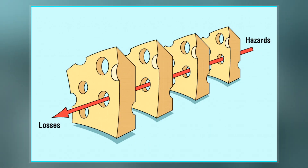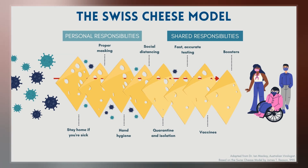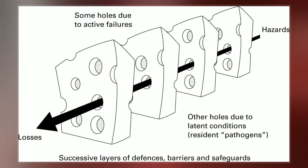In the Swiss cheese model, an organization's defenses against failure are modeled as a series of barriers represented as slices of cheese, specifically Swiss cheese with holes known as eyes, such as Emmental cheese.